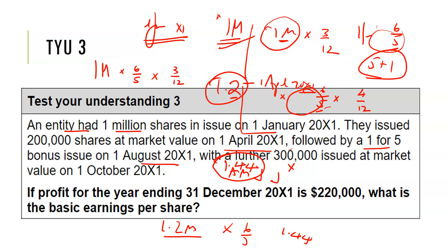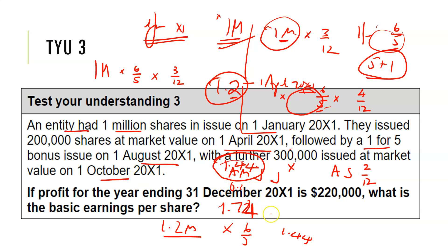So I have 1.44 million shares and I multiply by the weighted average — for August and September, that's 2 over 12 — because there's another market issue on the 1st of October. Then I add another 300,000 at the 1st of October, giving me 1.44 + 0.3 = 1.74 million shares. Then for October, November, December, I weight this again for 3 months. This is how I get my weighted average number of shares.